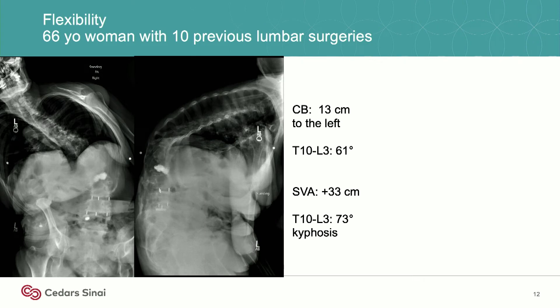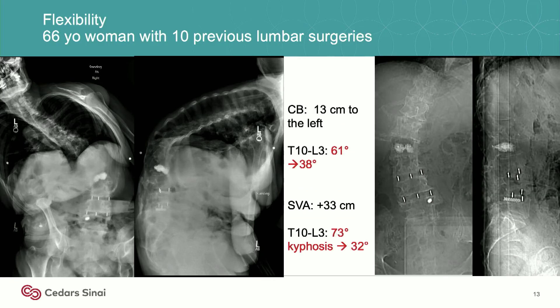This patient had over 10 previous surgeries, multiple infections, all of her hardware was taken out, she was falling over, and she was actually solidly fused from L2 to the pelvis from her previous surgeries. Flat back, major deformity — I was thinking, oh my goodness, do I need to do a VCR and a PSO? But then you look at her CT scan and her scoliosis goes from 61 degrees to 38 degrees — this is very flexible.